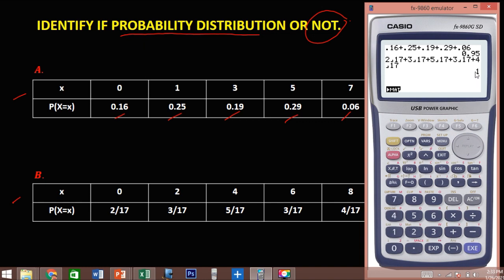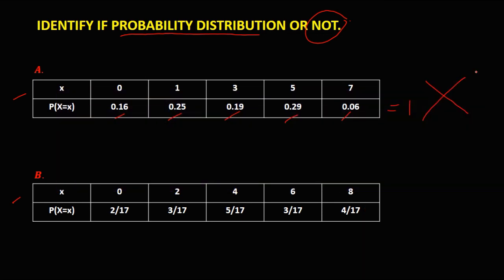That's equal to 1. Now since the sum is equal to 1, therefore this given is a probability distribution.